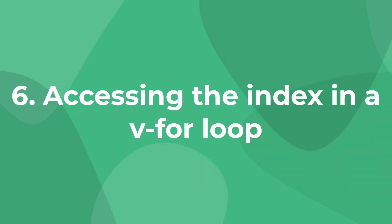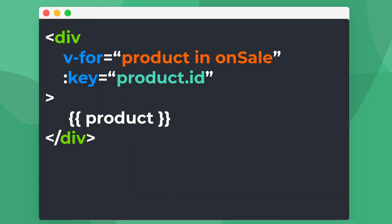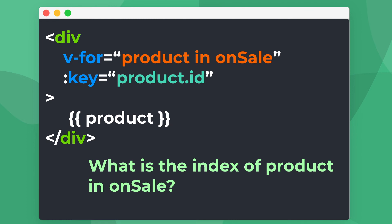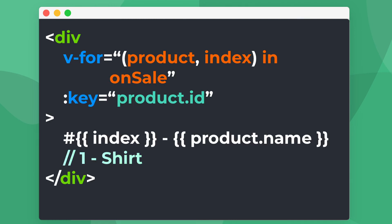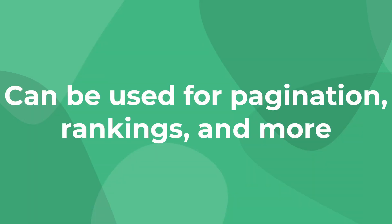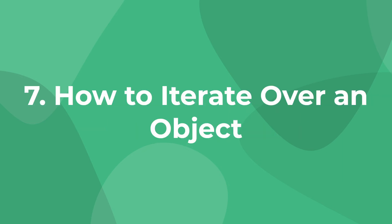The sixth tip is how to access the index inside of your v-for loop. In addition to looping over an array and accessing every element, we can also keep track of the exact index of every item. All we need is to add an index value after our item inside the v-for — it's that simple. This is super useful for things like pagination, showing rankings, or displaying the exact order of the list.